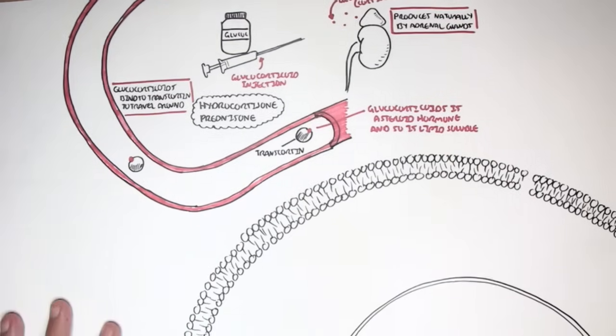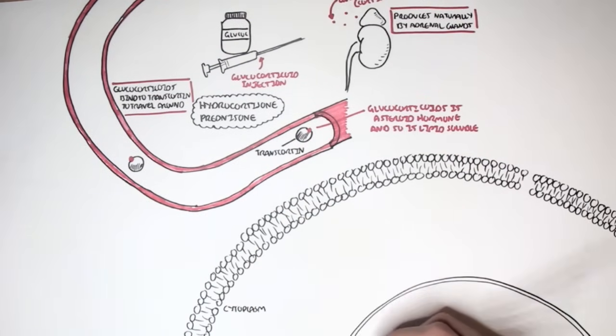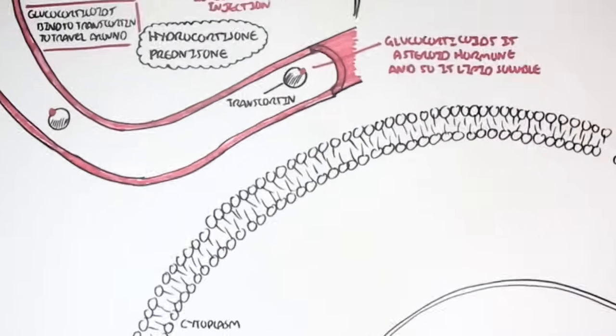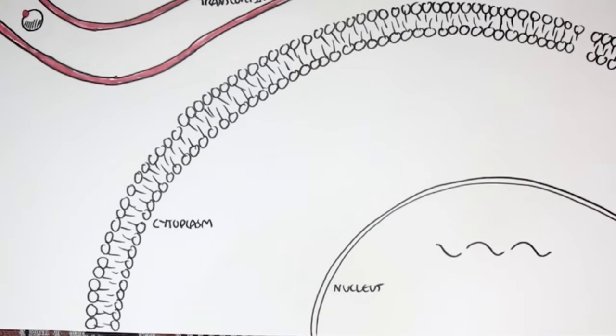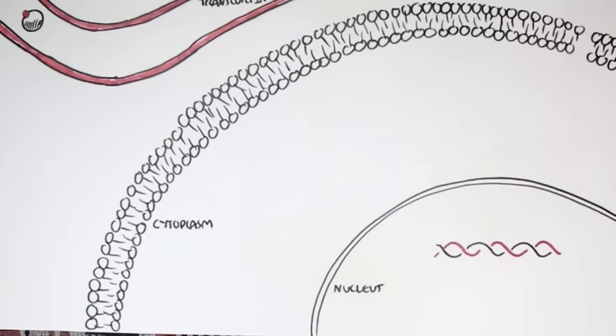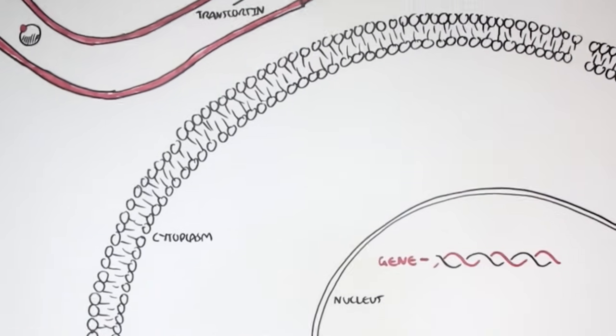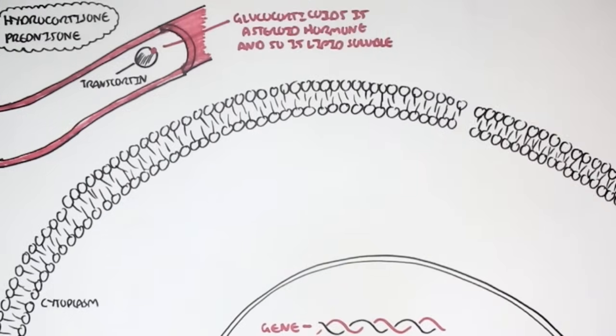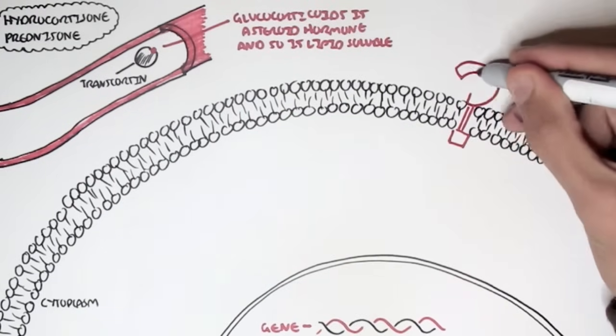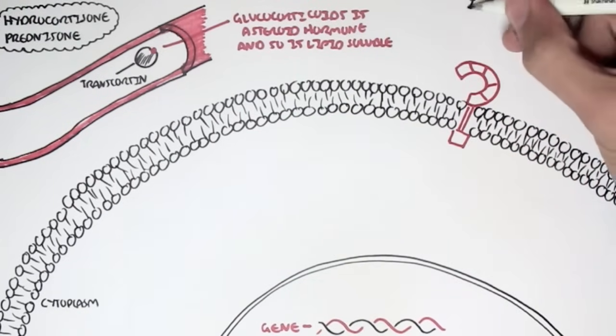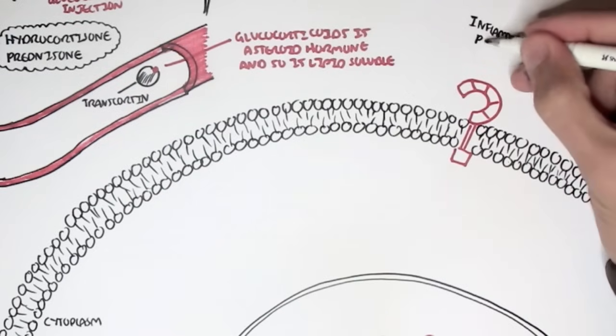So here we have a cell, it can be any type of cell. Here we have the cytoplasm of the cell and here we have the nucleus of the cell containing the genes. Before we see what glucocorticoids do, let's see what normally happens during inflammation, pain and infection. And look at this in an overall picture.